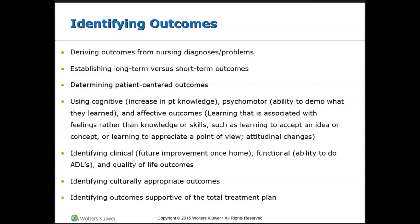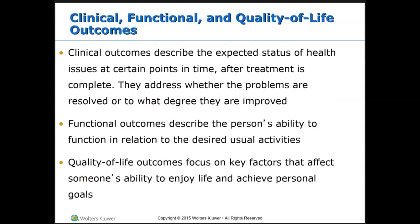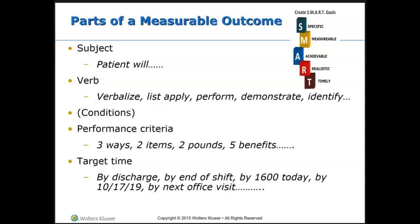There are examples on this slide — please pause and take a moment to write down notes and see how they differ. Remember, your outcomes should make sense for your patient and their current state of health and condition. Cognitive outcomes describe increases in a patient's knowledge or intellectual behaviors. Psychomotor describes a patient's achievement of a new skill. Affective describes changes in a patient's beliefs, values, and attitudes. Please pause the video and read through the examples — they are really good.